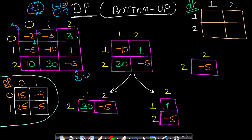Let us break this into sub-problems. Say we break at cell 1,1 and want to find the minimum energy starting at 1,1 to reach and save the princess at 2,2. The sub-matrix is: cells with values minus 10, 1, 30, and minus 5. We can further break this into two sub-problems by choosing between cells 1,2 and 2,1.